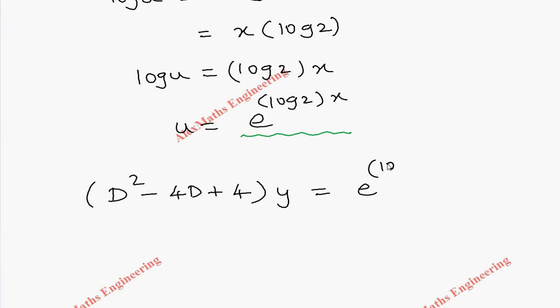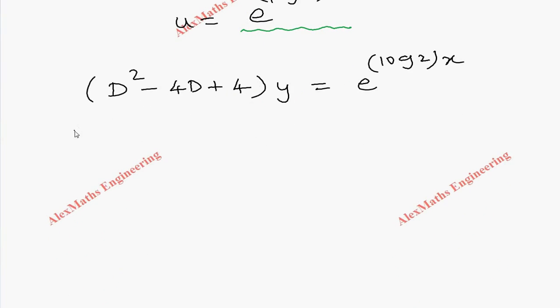Now let's start solving the problem. First, we have to write the auxiliary equation, which is m² - 4m + 4 = 0. This is nothing but (m - 2)² = 0. We get two values for m: one is 2 and another is also 2. We get equal values.